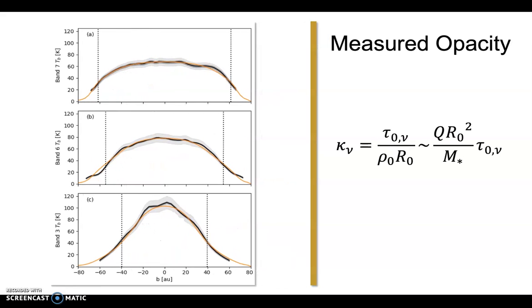Finally, we fit the major axis profiles to get the opacity from tau_0. Here is the result of fitting, which we can see that the constant Q model fits the data fairly well.